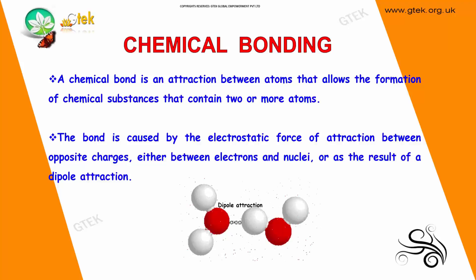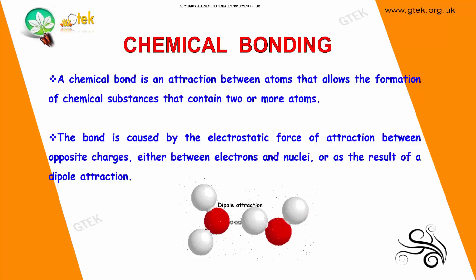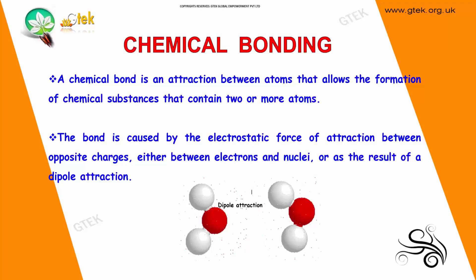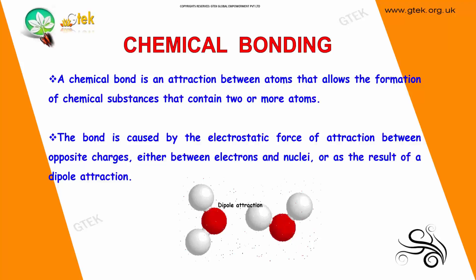What is a chemical bond? It is an attraction between atoms that allows the formation of chemical substances that contain two or more atoms. This bond is caused by the electrostatic force of attraction between opposite charges, either between electrons and nuclei or as a result of dipole attraction.